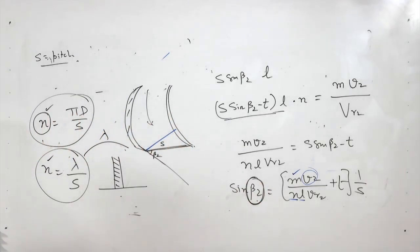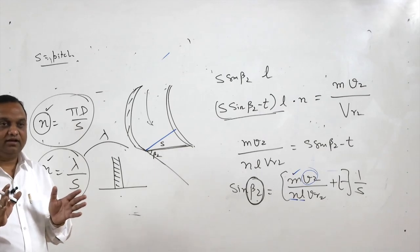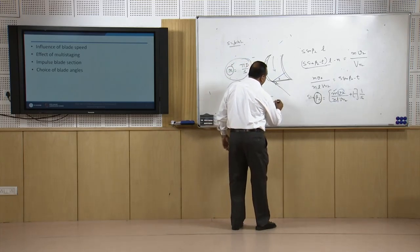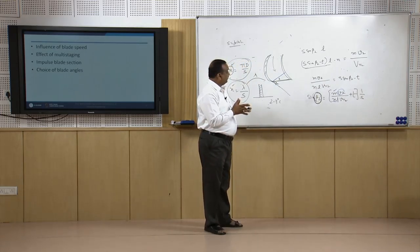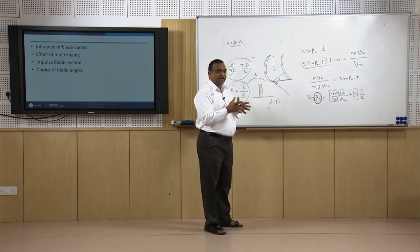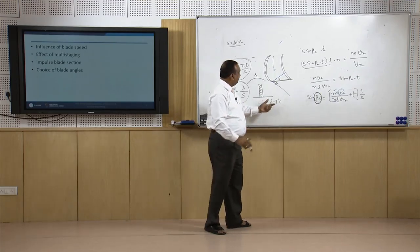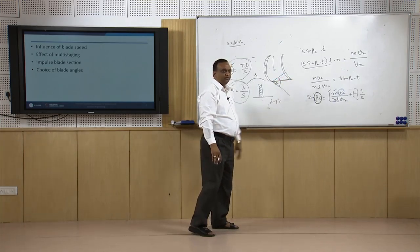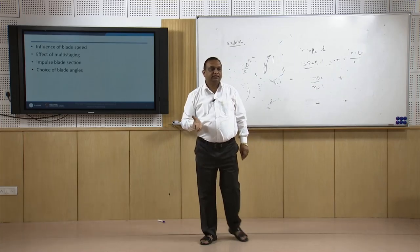The blade outlet angle β2 is normally taken 2 to 3 degrees less than what is actually calculated from this formula, so that it works well under partial load and also gains some reaction from the change in vapor velocity. With this, we have completed the choice of blade angles for impulse turbine blades. That is all for today.